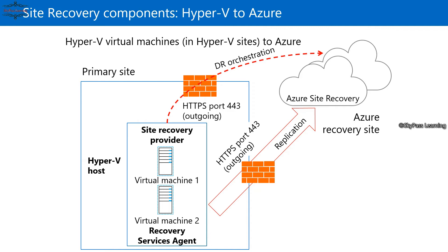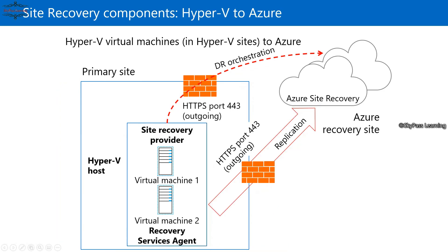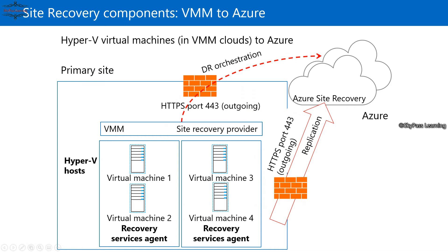The second scenario is similar but involves SCVMM — System Center Virtual Machine Manager — for managing on-premises VMs. With SCVMM, you have an additional management layer on-premises. You can integrate your VMM environment with Azure Site Recovery, which handles the DR orchestration structure. VMs are still replicated independently to Azure Site Recovery, and you deploy the Recovery Services agent to enable on-premises to cloud deployment.